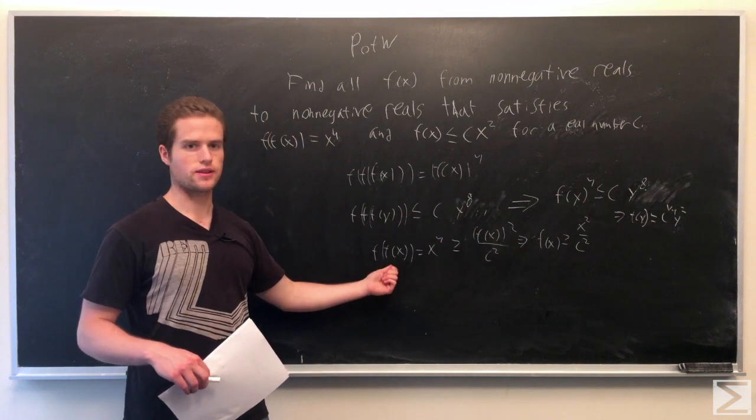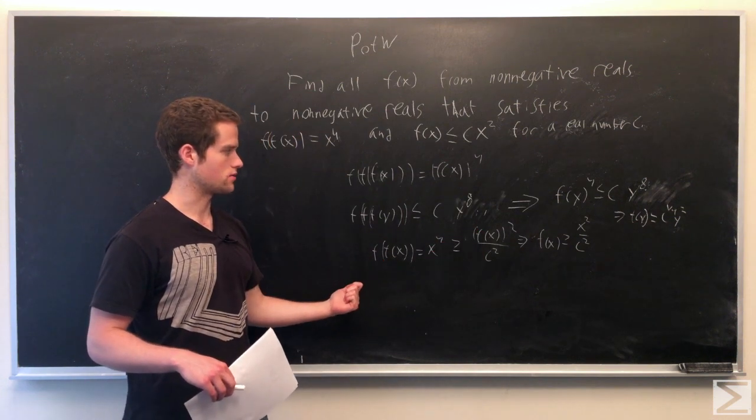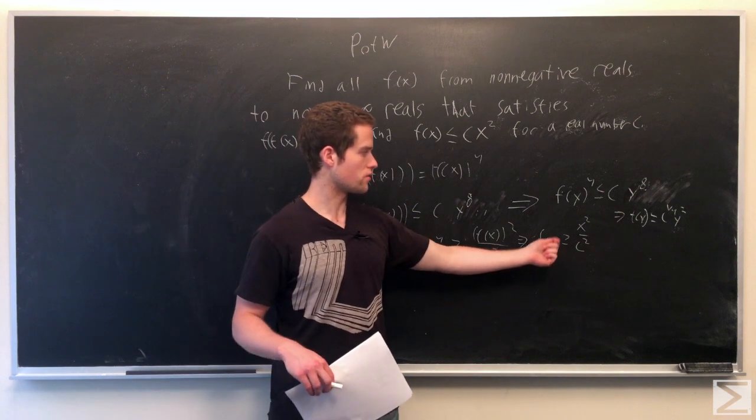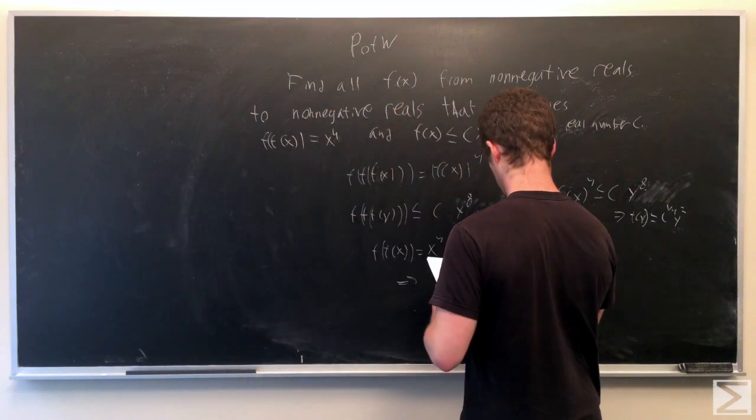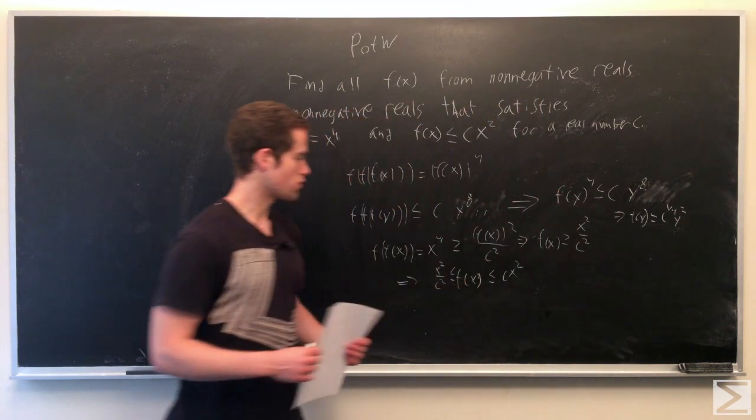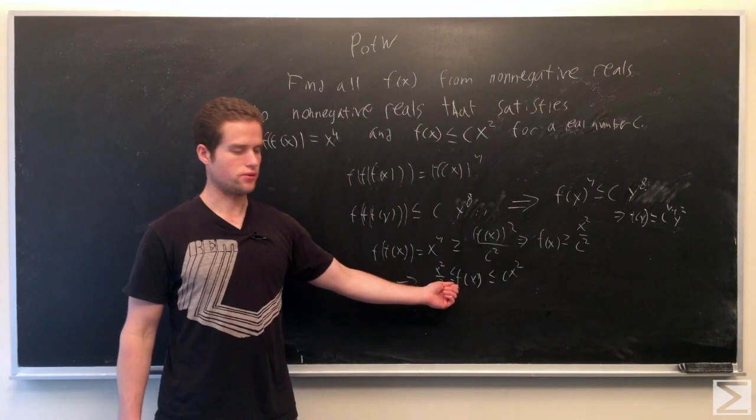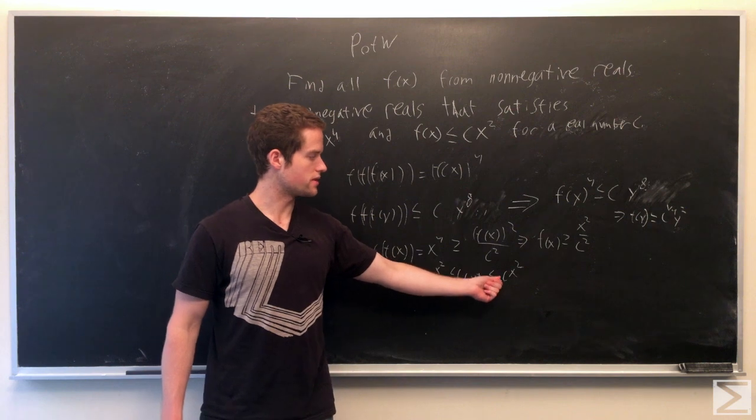So this implies, f of x is x because f of x is surjective. We have f of x is greater than or equal to x squared over c squared. So we have the bounds x squared over c squared is less than or equal to f of x with less than or equal to cx squared.